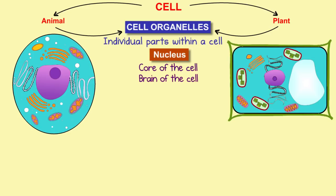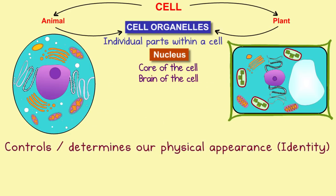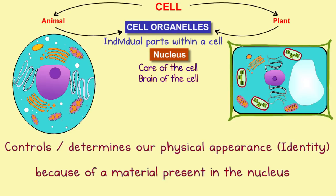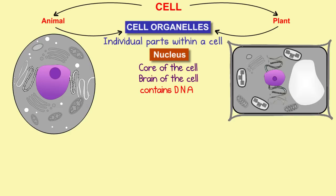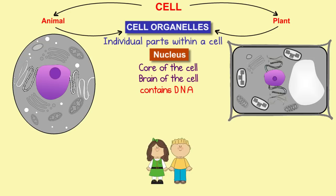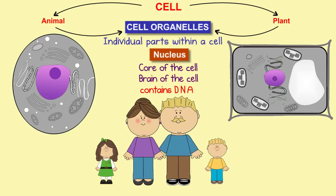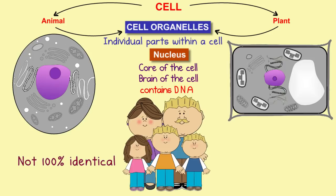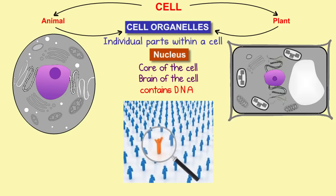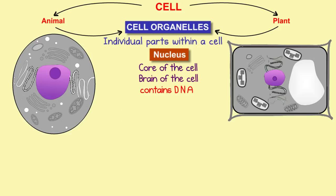So how and what exactly does it control? It controls or determines our physical appearance because of some material which is present within the nucleus. This material is called DNA, which stands for deoxyribonucleic acid. Our DNA is passed on to us by our parents, and this is the reason why we all look similar to our parents. But it is not 100% identical, as there is some amount of DNA which is different, and because of this difference, there won't be any individual on this planet with the same identical DNA as yours. This uniqueness makes studying the structure and functions of DNA so important.